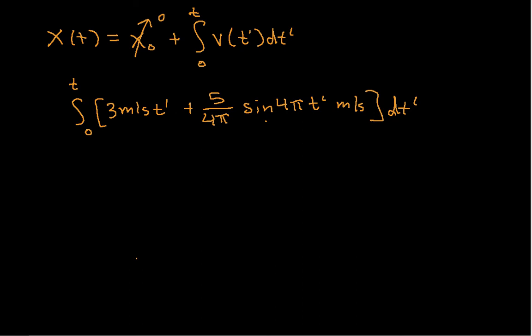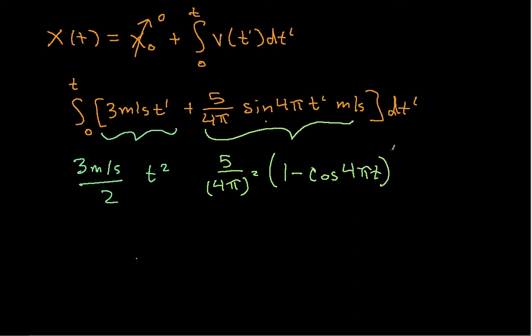Okay, so this first term, this guy here, will be 3 meters per second over 2 times T squared when I work out this integral. Again, I won't go through the details, but hopefully you've done enough integration that you can see this. Or if you haven't, go ahead and actually work it and make sure I haven't lied to you. And then this guy here, the integral will be, when I work it all out, 5 over 4 pi squared, 1 minus cosine 4 pi T. And this would also end up having units of meters.